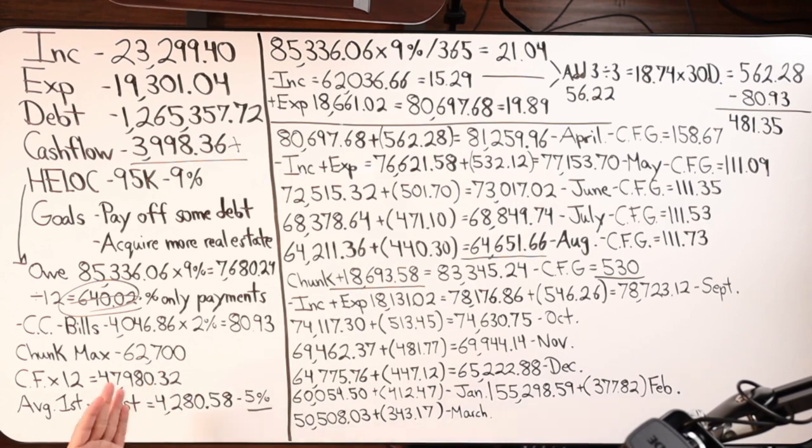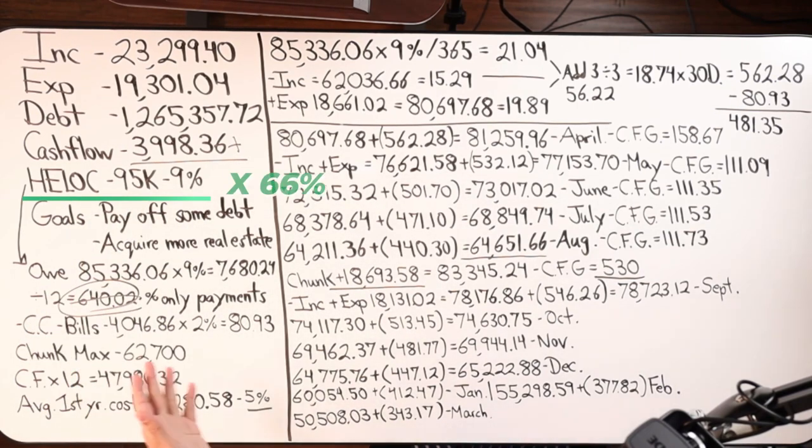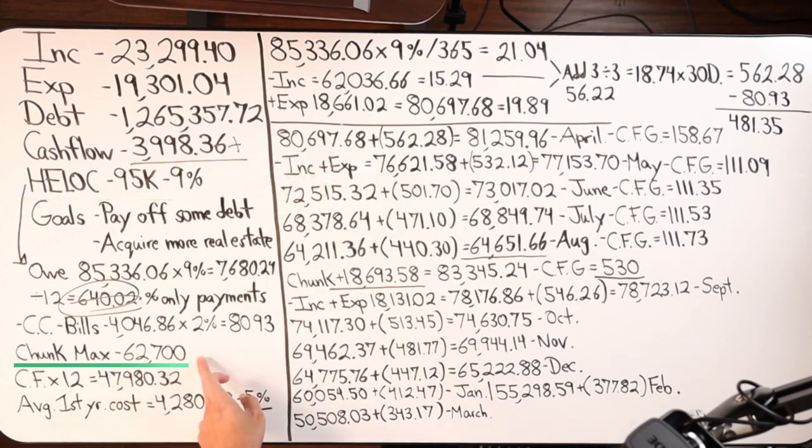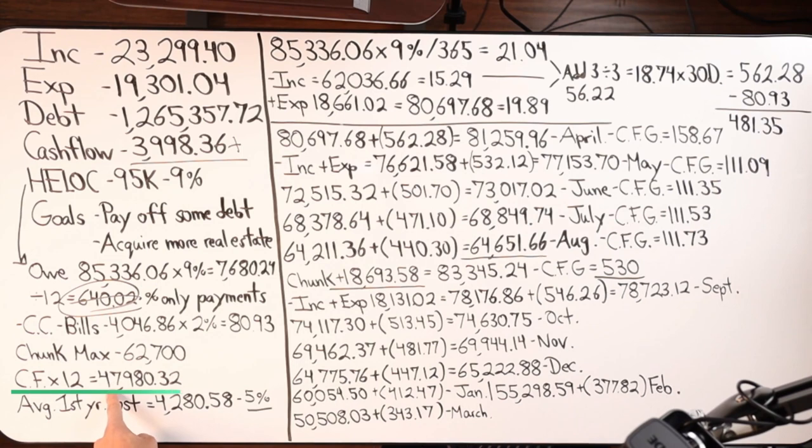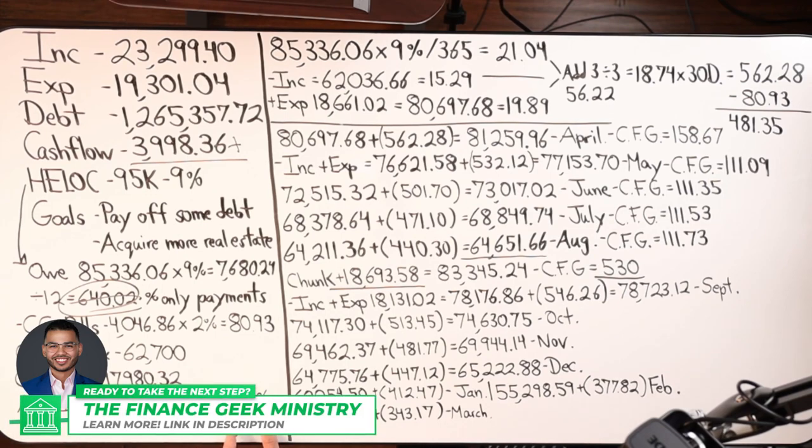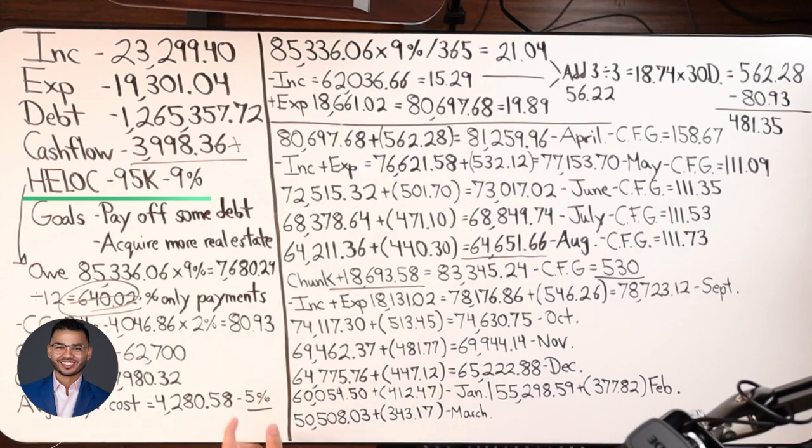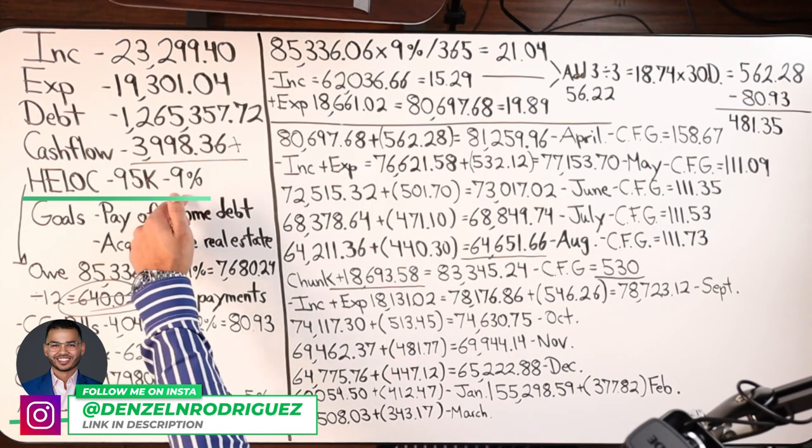Here's our rule of leverage. You take the credit limit times it by 66%. You should get this number, $62,700. Cashflow times 12, where it currently is $3,998.36. You should get this number, $47,980.32. Average yearly cost when doing velocity banking should be around this number, $4,280.58, which is actually a 5% cost of borrowing. The bank said 9, we paid 5,000. That is the beauty of velocity banking here, where we can manipulate that rate.